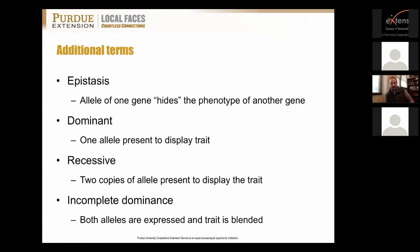Some other important concepts: epistasis is where the allele of one gene can hide the phenotype of another gene. A dominant allele will display a trait; a recessive allele requires two copies to express that trait. Incomplete dominance is where both alleles are expressed together, resulting in a blended phenotype. A classic example: crossing a red flower with a white flower can produce a pink flower — neither red nor white, but a blend of both.